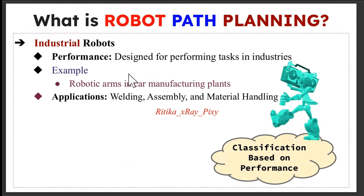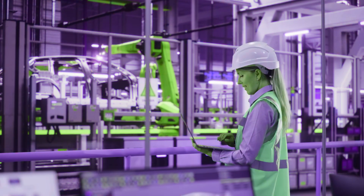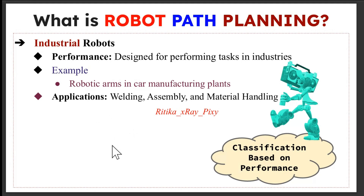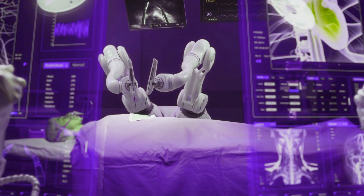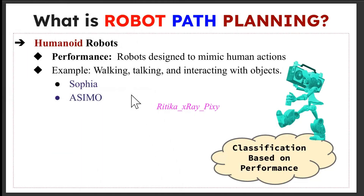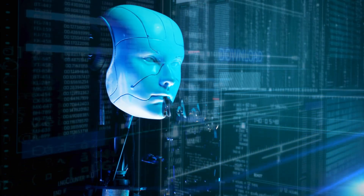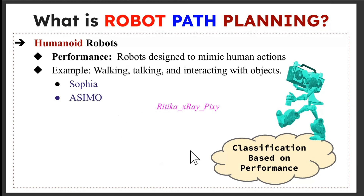Performance-wise, we focus on what a robot can do and how it performs its tasks. Industrial robots are designed to perform tasks like welding, painting, and material handling. Service robots are designed to help humans by performing tasks like cleaning, delivering, or assisting in healthcare. Medical robots are designed for medical purposes such as performing surgery. Then we have robots designed to mimic human actions — such as walking, talking, and interacting with objects. For example, Sophia — built to perform tasks that humans do, often used in research.